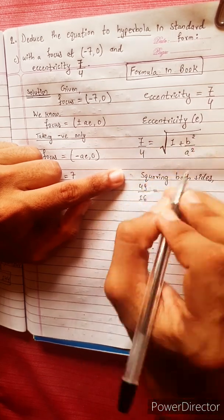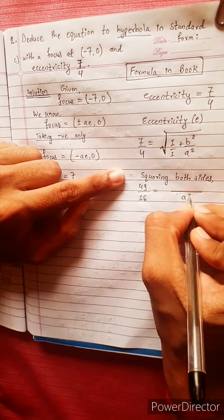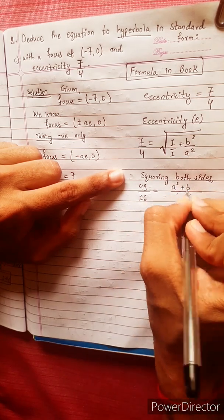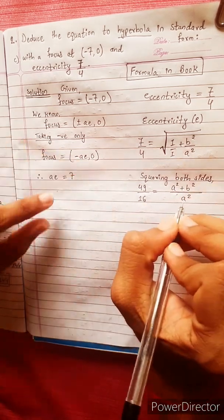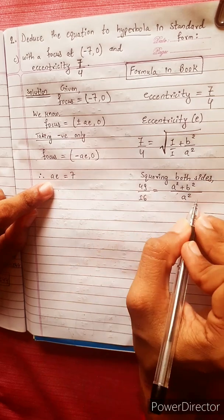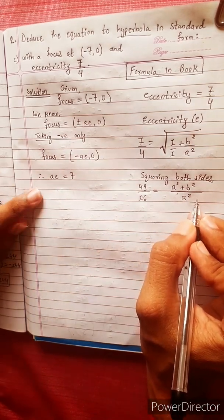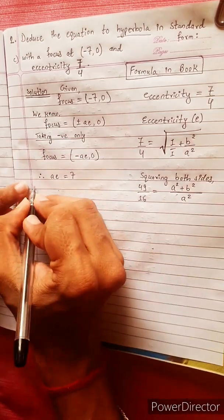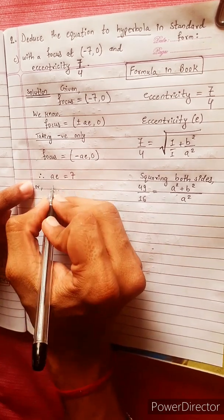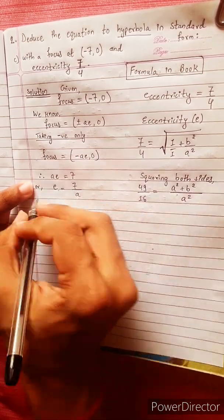Cancel the square root. Using LCM on a squared plus b squared. We substitute E equals 7 divided by a.